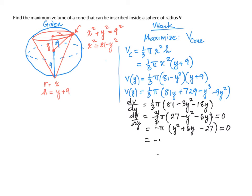And that is negative pi times y plus 9 times y minus 3. And set that equal to 0, our critical points are negative 9 and positive 3. We are going to use the positive value and discard the negative because the dimension is positive.